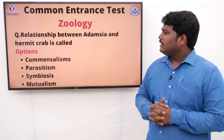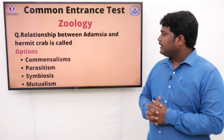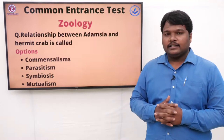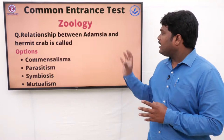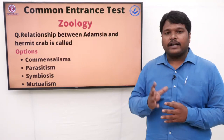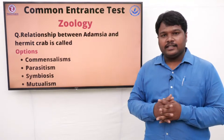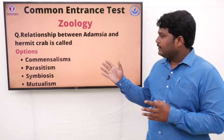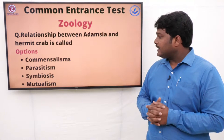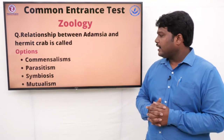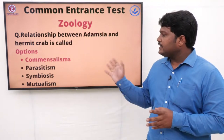Question 17: The relationship between Adamsia and Hermit Crab is called. There is a relationship between Adamsia and Hermit Crab — crabs we can see in river areas and ocean/sea areas. Options: A) Commensalism, B) Parasitism, C) Symbiosis, D) Mutualism. The right answer is Commensalism.